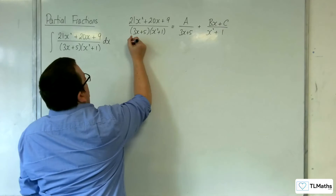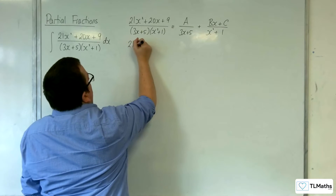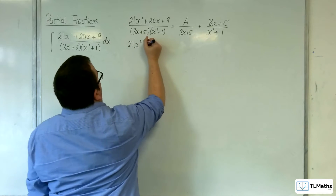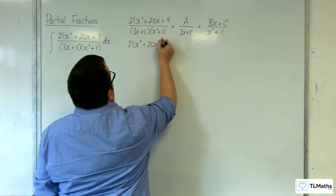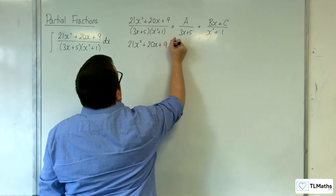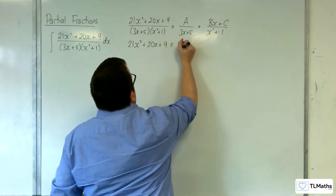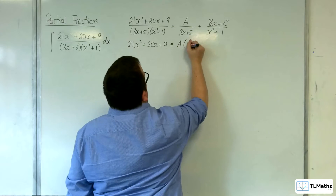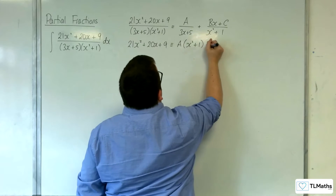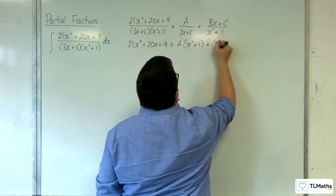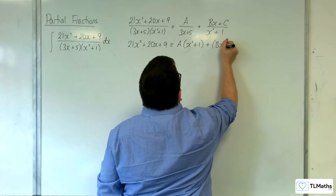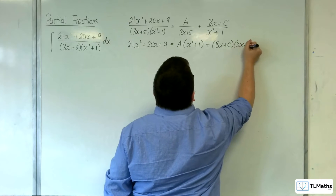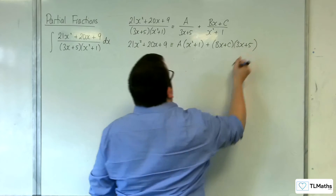Multiplying through by the denominator we'll have 21x squared plus 20x plus 9 is equivalent to a lots of x squared plus 1 plus bx plus c lots of 3x plus 5.